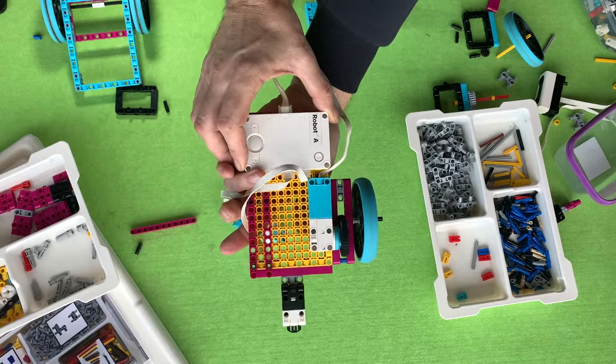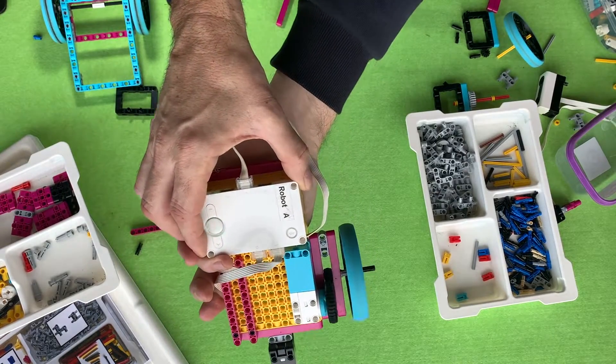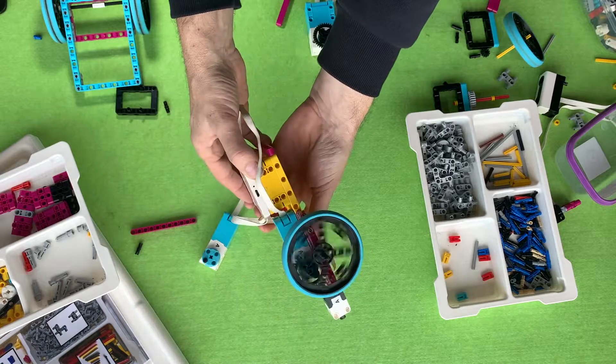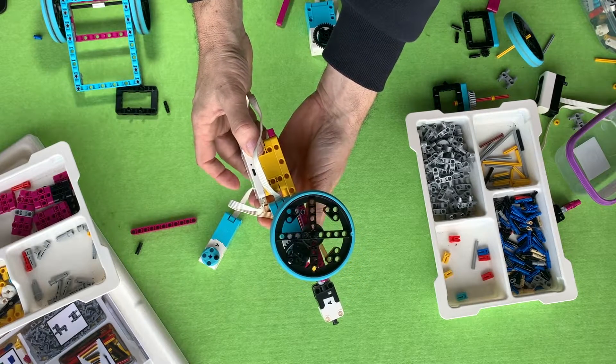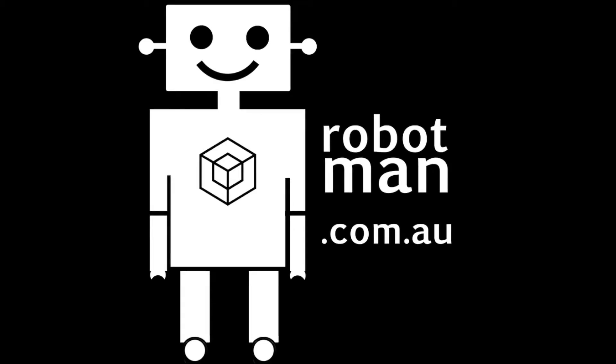So there's some examples of how you can make wheels spin really fast using cogs. I hope that's useful. Please like and subscribe and check out my website www.robotman.com.au.